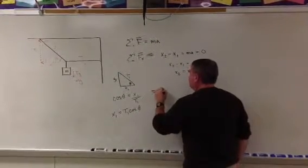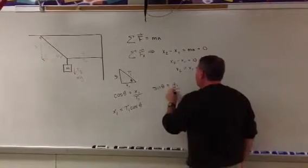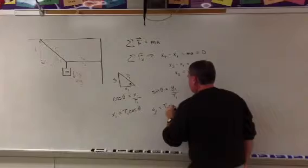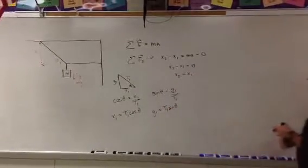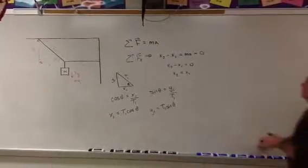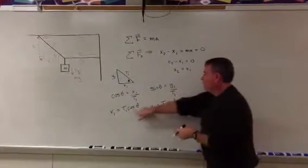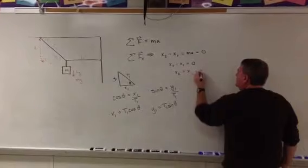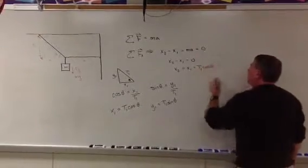So y1 is equal to t1 sine theta. Now, x1 is equal to t1 cosine theta, and x1 equals x2. So they are both equal to t1 cosine theta.